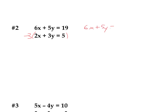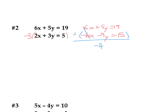Now I'll have negative 6x minus 9y equals negative 15. When I multiply by negative 3 — everything by negative 3 — I have a 6 and negative 6 that I can add together to cancel out. If you multiply by positive 3, you'd subtract the equations and it still works the same. So 6 plus negative 6 cancels out. 5 plus negative 9 is negative 4y, equals 19 plus negative 15, which is 4. When I divide both sides by negative 4, I get y equals negative 1.